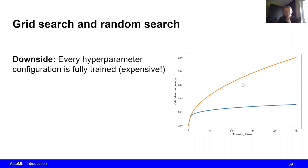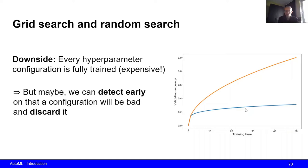Note that some configurations are better early on as well as later on than other configurations. Suppose that on the x-axis we have the training time of the configurations and on the y-axis we have the validation accuracy. We see that one configuration is improving in performance quite fast and steadily, whereas another configuration is not doing so well. Ideally, we want to detect that the poor configuration is not going to be as good as the other one — giving us evidence to discard it early on, saving compute time instead of training it fully.